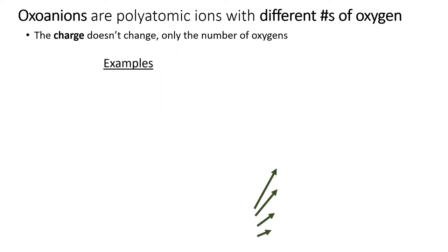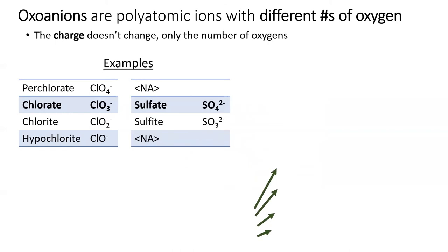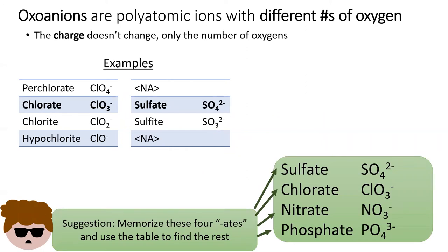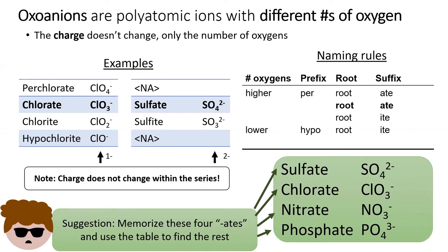Some sets of polyatomic ions follow a pattern where the nonmetal atom and the charge are the same, but they have different numbers of oxygen atoms. One example is the chlorate series — all entries have chlorine, all have a minus one charge, yet different numbers of oxygen. The most common ion in a series is usually named with "-ate." Memorize the four "-ates" shown, then use the naming table to convert them into different entries depending on oxygens added or removed — giving you all the "-ites," per-"-ates," and hypo-"-ites."